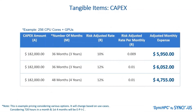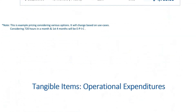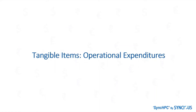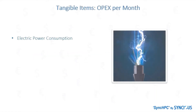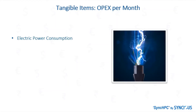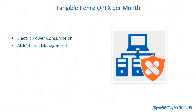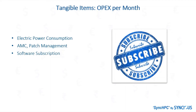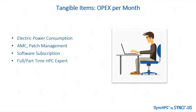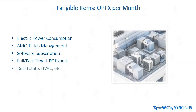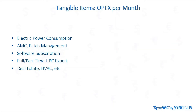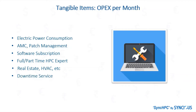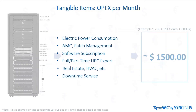We can also check out other examples with different time periods at different risk-adjusted rates. After the capital expenditure, let's check out the operational expenditure. First is the electric power consumption of the HPC system. Second is AMC — annual maintenance cost — and patch management of the system. Third is the software subscription of the HPC hosting platform. Fourth is the salary of HPC experts. Next is the real estate and HVAC cost. And the last is the downtime cost or service cost of the system after the infrastructure gets ready.